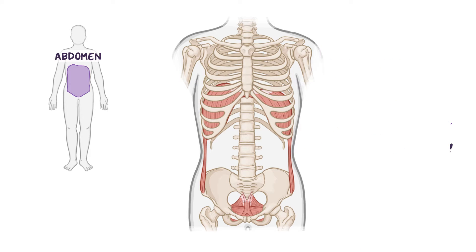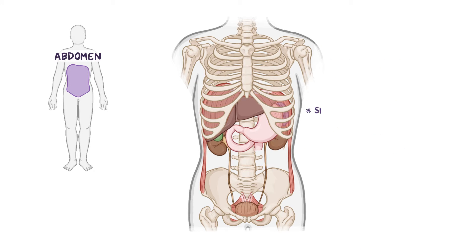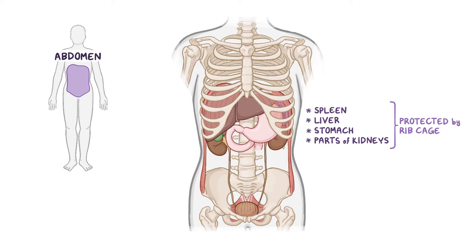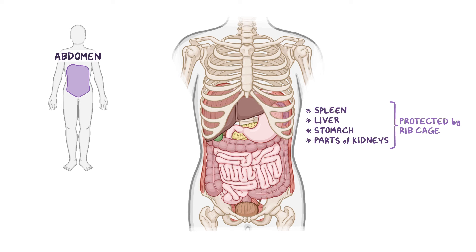Some organs found within the upper region of the abdominal cavity, such as the spleen, liver, stomach, and parts of the kidneys, are actually protected by your ribcage. Inferiorly, the lower portion of the abdominal cavity doesn't have a physical boundary because it's continuous with the pelvic cavity, so sometimes they're lumped together under the term abdominopelvic cavity.